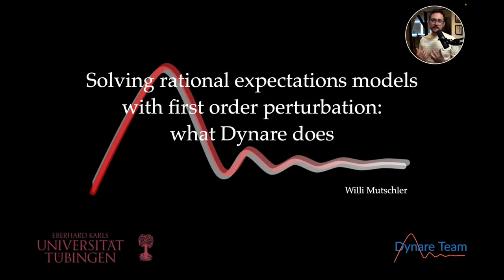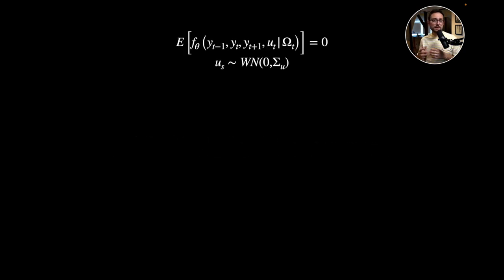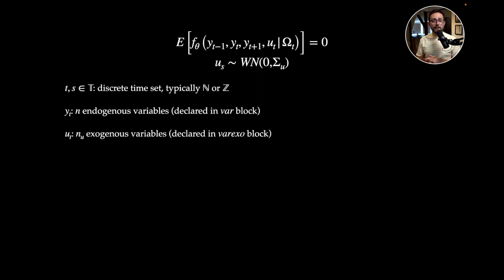Let's start with the linear rational expectation solution. First of all, let's talk about the DSGE model framework. Very generally speaking, the model is given by two equations, where t and s denote the discrete time index — typically the natural numbers or whole numbers. Yt are our endogenous variables and we have n of those — these are the variables that in Dynare you declare in the var block. Then we have ut, the exogenous variables.